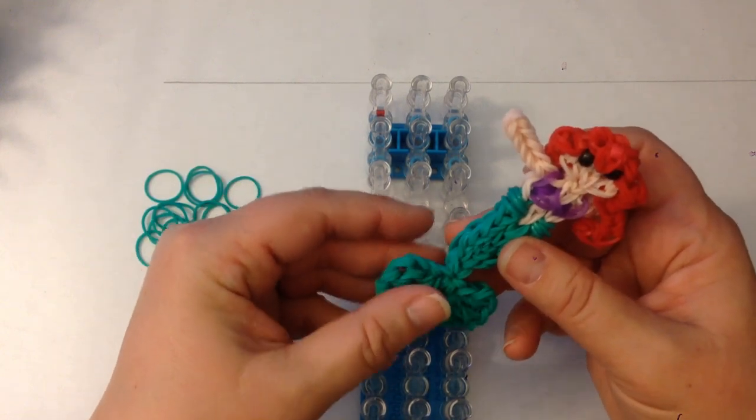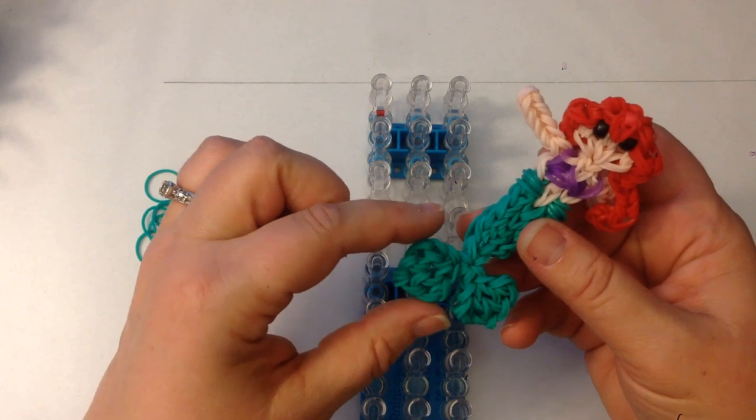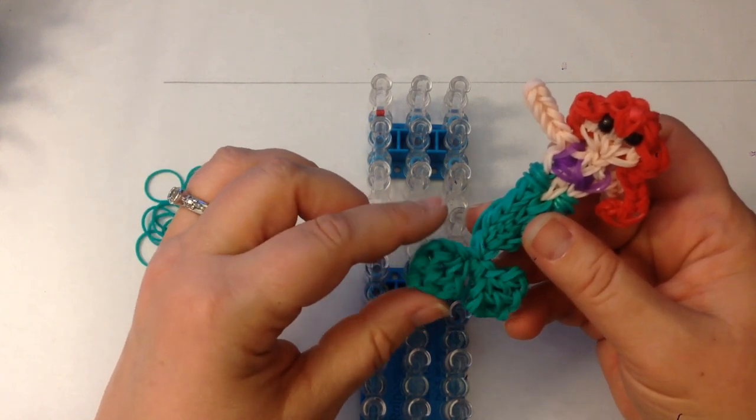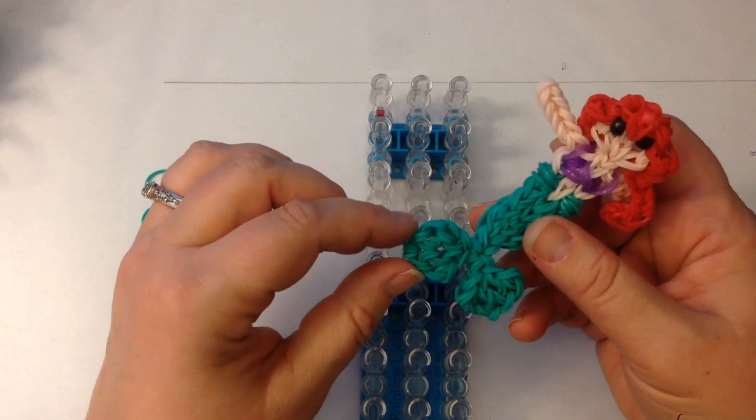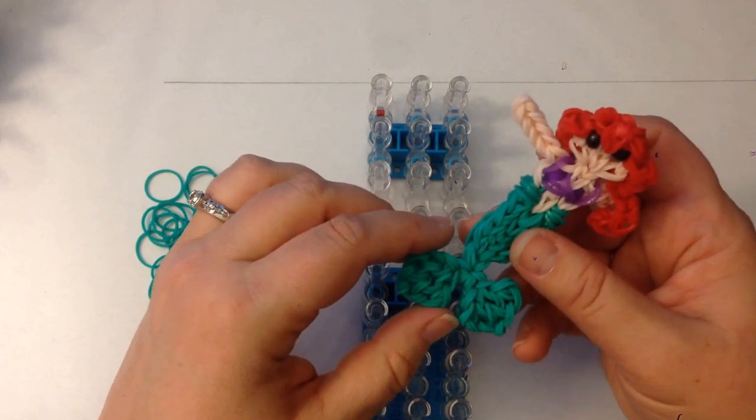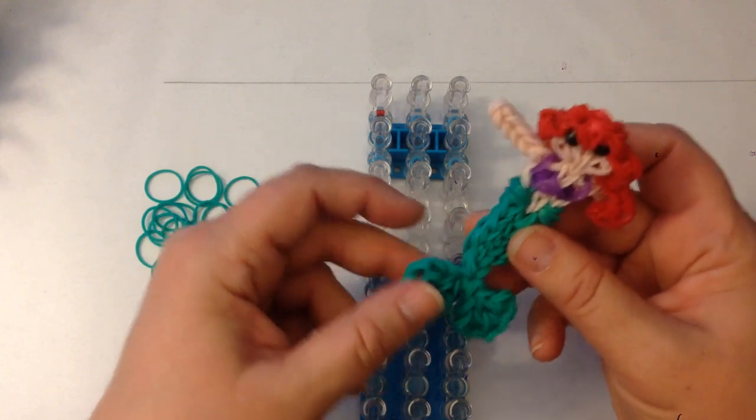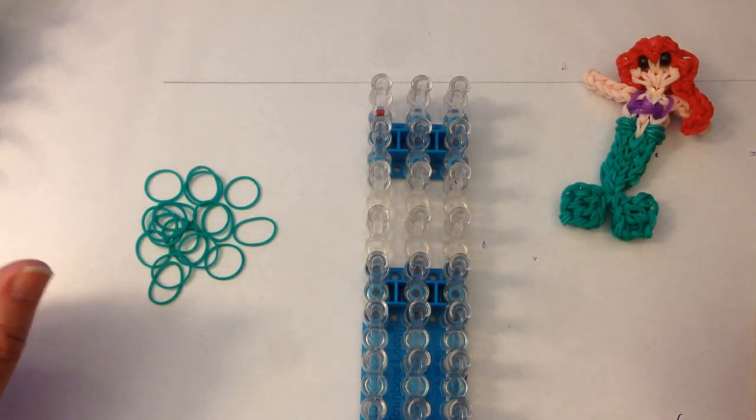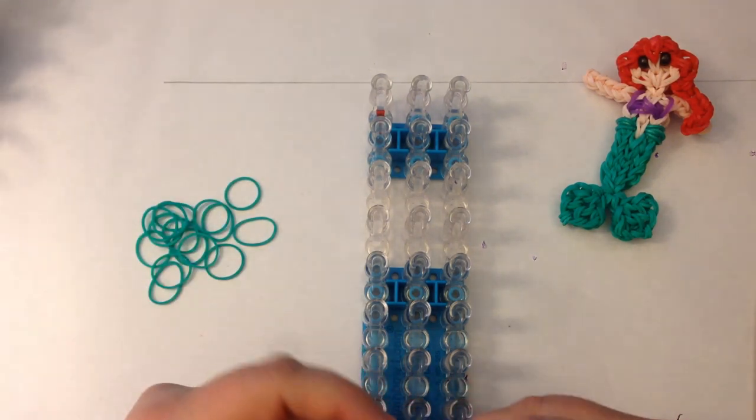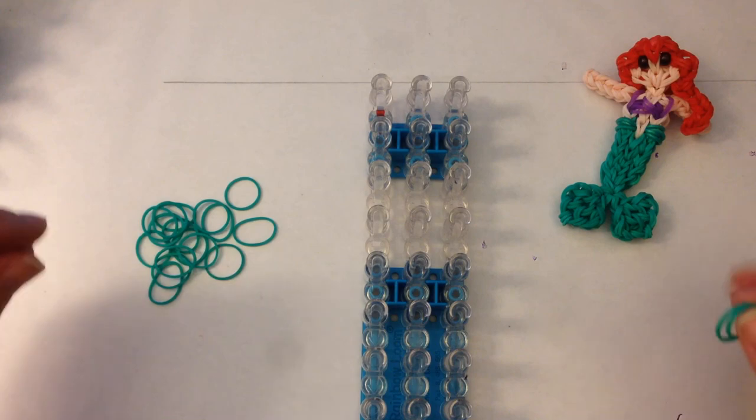I had a message from Thomas saying that they were very frustrated to the point of tears with doing it on the hook. So Thomas, we can't have tears. We have to turn that frown upside down. We have to have smiles and giggles and lollipops and rainbows, so let's do this on the loom to make you happy again. I don't like hearing that there's tears.